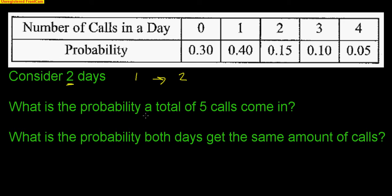What is the probability a total of five calls come in over those two days? How can I get a total of five calls? I can get four the first day, then one the second day, or one the first day, four the second day. That is different. Or two the first day, three the second day, or three the first day, two the second day. So now all I've got to do is walk through these options. Four would be 0.05 times one would be 0.40, or 0.40 times 0.05, or the two would be 0.15 times 0.10 for the three, or another option. Multiply and add these four options together. You should come up with 0.07, or a 7% chance that you get five calls coming in total.